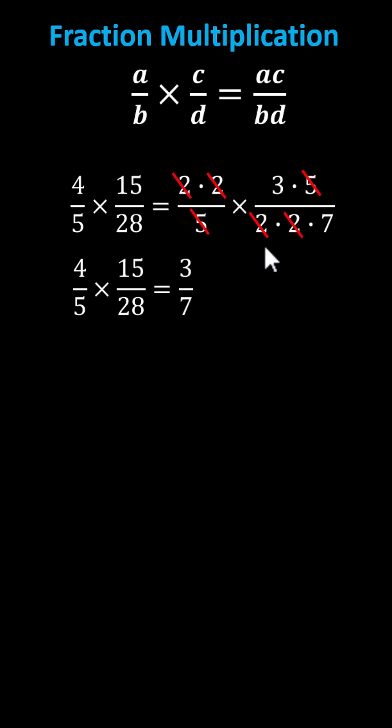Another way to simplify before multiplying is to go back to the original product. And if you know your multiplication tables really well, you might recognize that 4 and 28 share a common factor of 4.